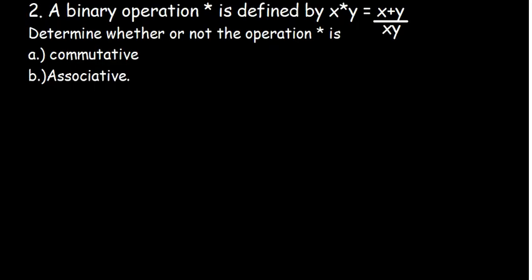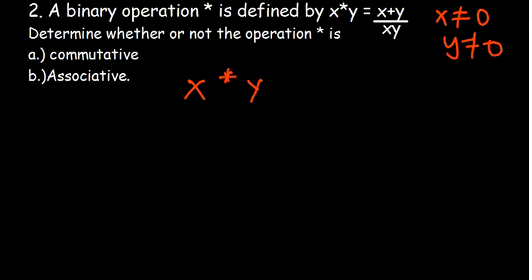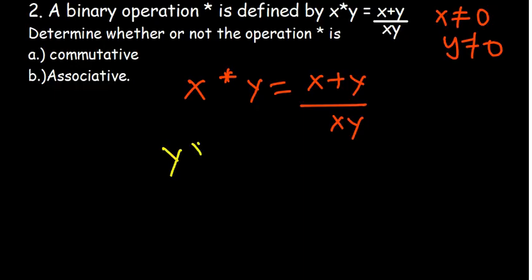For question two, a binary operation is defined where x★y equals (x plus y) over xy. Of course x should not equal 0 and y should not equal 0, because that would make the operation undefined. We need to determine whether this operation is commutative. Let's compute x★y first, then try y★x.